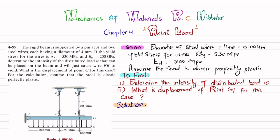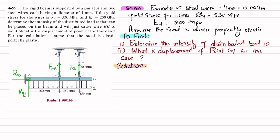The first step: if you remove the pin support at point A, there will be a reaction force R_Ay and a horizontal reaction force R_Ax. If you remove wire BE, there will be a vertical reaction F_BE on the beam, and similarly for wire CD, the vertical reaction force is F_CD. The distributed load converted into a point load equals w times the total length: 400 plus 250 plus 180 equals 800 millimeters, or 0.8 meters, with units of newtons per meter.